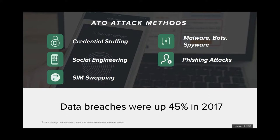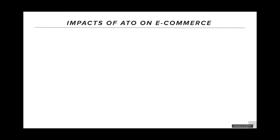Malware, bots, and spyware show an automation side to what fraudsters are doing. This isn't some individual sitting alone — these are sophisticated fraud rings working together to perpetrate crime. And then phishing attacks, which we've all likely received: emails that look like they're coming from the IRS or a legitimate company, asking a consumer to take an action such as clicking a link.